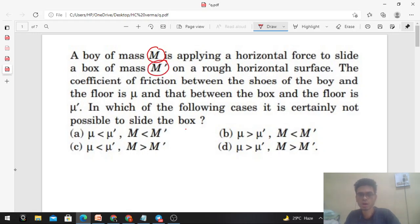On a rough horizontal surface, the coefficient of friction between the shoes of the boy and the floor is μ, and that between the box and the floor is μ'. In which of the following cases is it certainly not possible to slide the box?